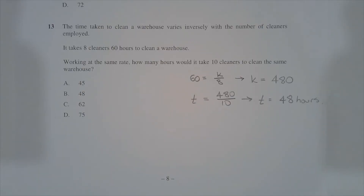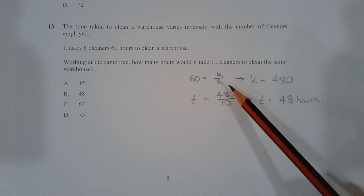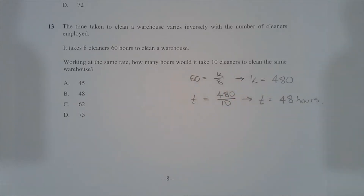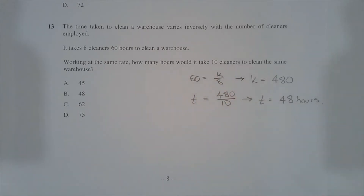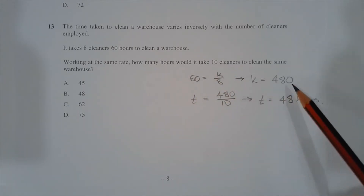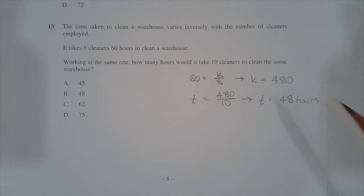Applying the inverse variation formula, 60 is equal to k divided by 8. So we need to determine the value of k. Multiplying both sides by 8 and making k the subject of the formula, we get k is equal to 480. This value represents the number of hours it would take one cleaner to clean the warehouse at the same rate.